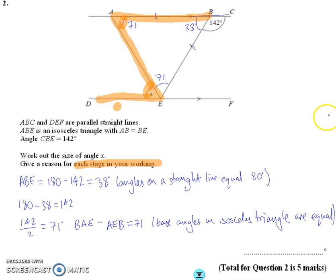That tells me that AED, which is x, is equal to BAE at 71 degrees. And the reason why is that AED and BAE are alternate angles. So that tells me that x is 71 degrees. And I have to give my reasons at each stage.